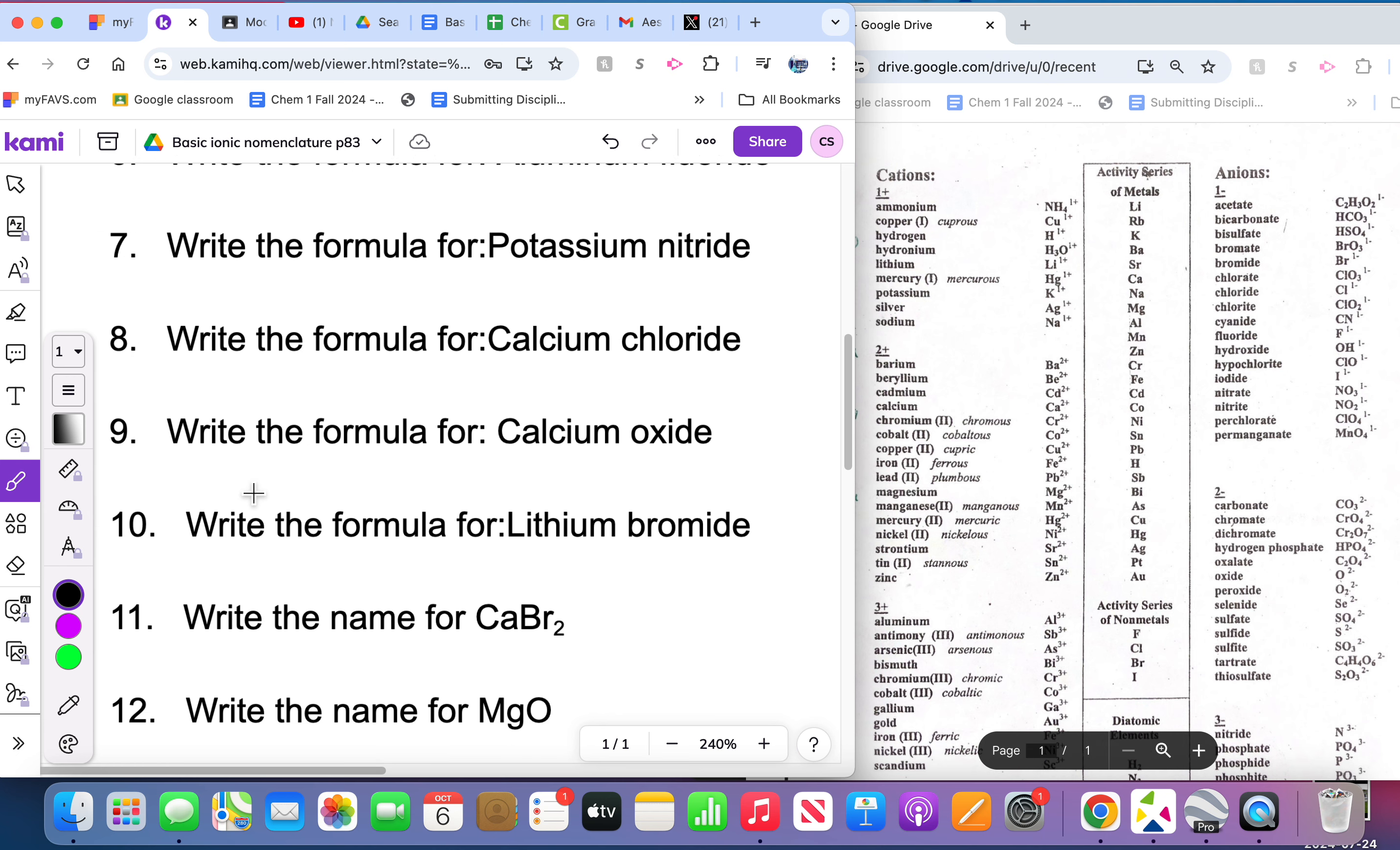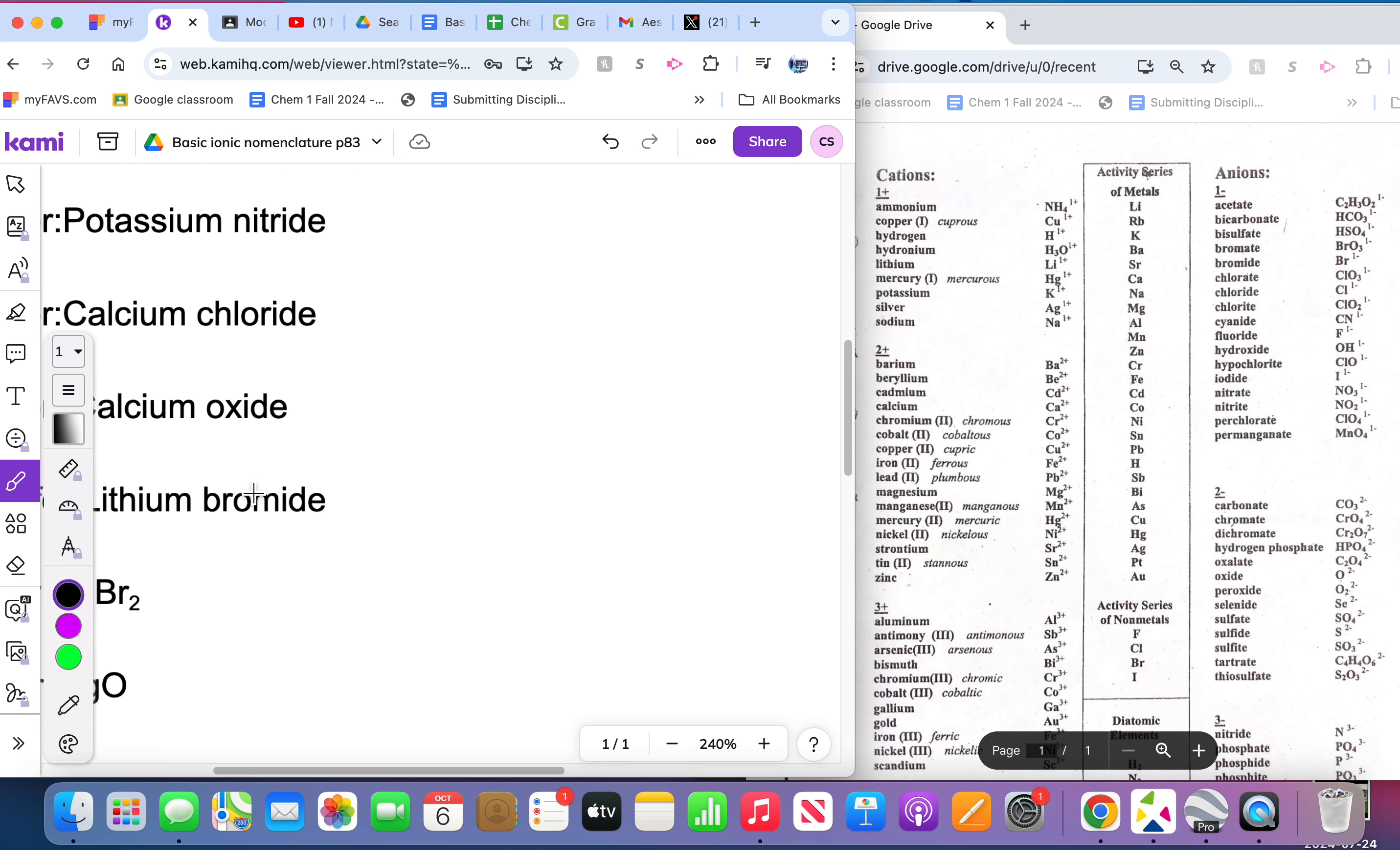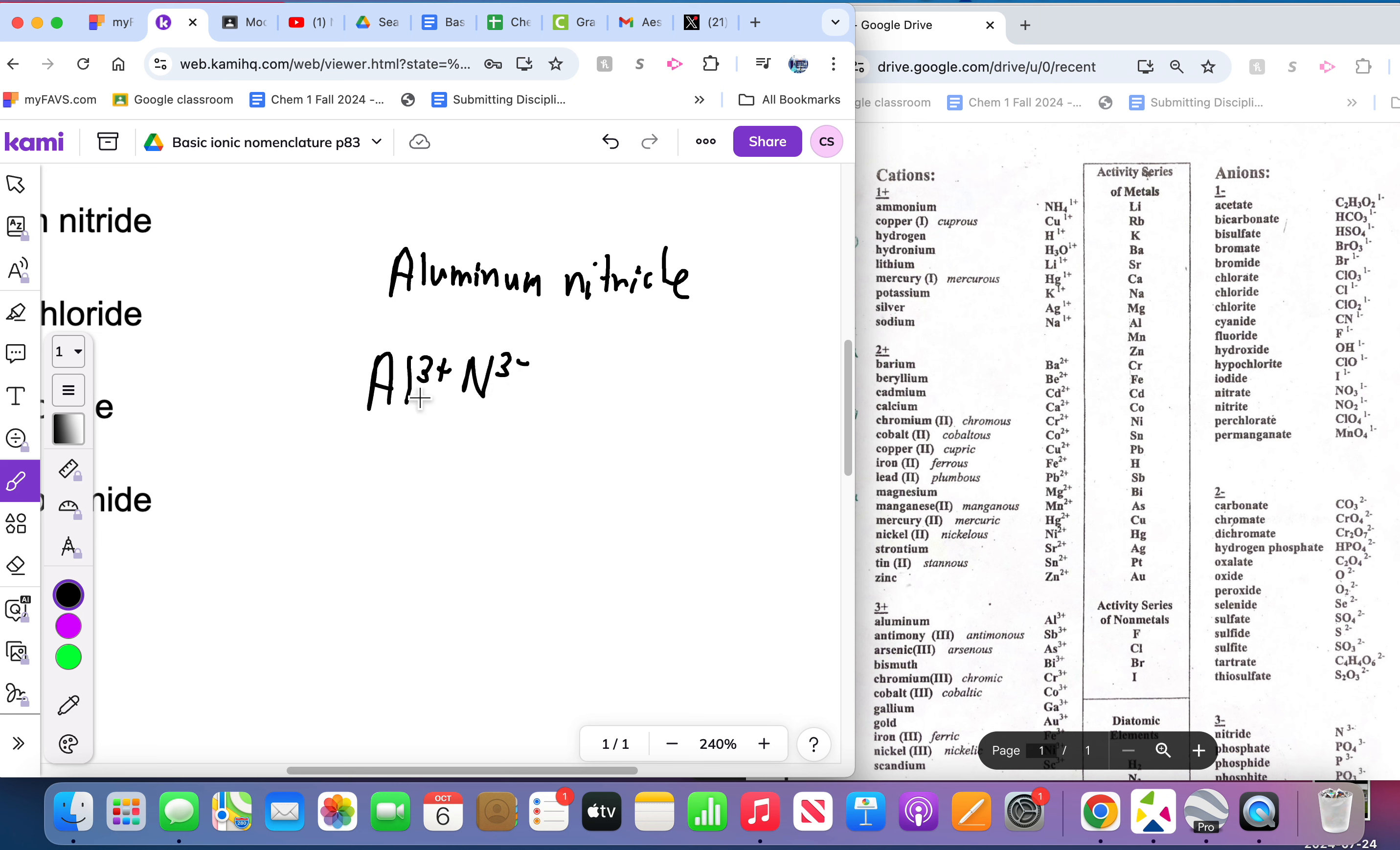You can write the rest of them on the worksheet. I do want to show you one thing. Let's say you're doing one that comes up like this one, aluminum and it's nitride. You would write it Al three plus, nitride three minus. If the charges are already the same, you just need one of each, so you would get AlN.